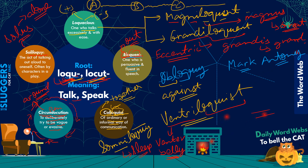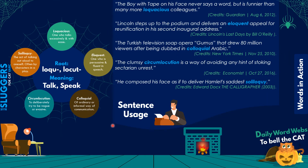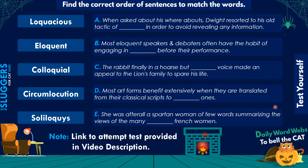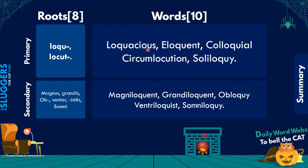That covers the roots for today. You can pause the video and go through the sentence usages of these words — they have been sourced from reliable sources with credits mentioned. You can also pause and test yourself by finding the correct order of shuffled sentences matched to the right words. A Google Form link is provided in the description. Finally, here's a summary of the roots and words studied today — pause and try to recall their meanings.